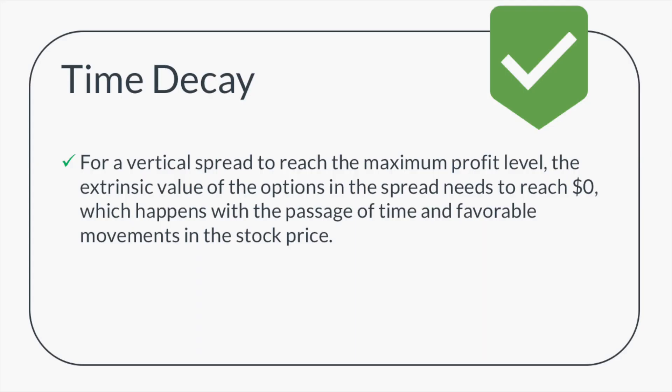This wraps up our video on time decay and vertical spreads. To recap: for a vertical spread to reach maximum profit potential, the extrinsic value of the options in the spread needs to reach $0, which happens with the passage of time and favorable movements in the stock price. When you trade a vertical spread, there's a directional component that's highly important, but even if you get the desired outcome from the stock price, you still need extrinsic value to come out of the options to hit maximum profit potential. You need both a favorable stock price movement and the passage of time.